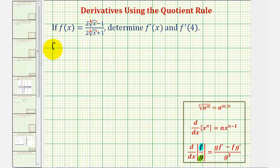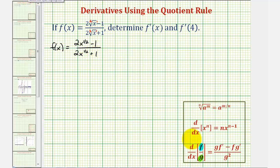So the given function f of x can be written as two times x to the one half power minus one, divided by two x to the one half plus one. When applying the quotient rule, the numerator f is two x to the one half minus one, and the denominator g is two x to the one half plus one.